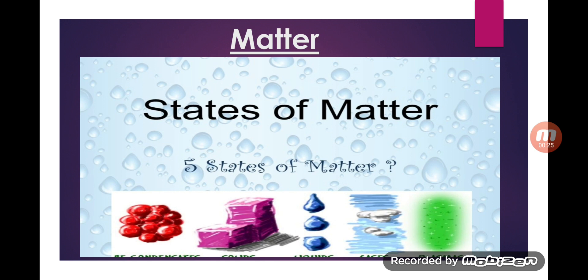Actually, there are five states: solid, liquid, gas, plasma, and Bose-Einstein condensate. But in your class, we will discuss only three states — solid, liquid, and gas. We have already discussed what is solid, what is gas, and what is liquid, and also the arrangement of molecules and atoms in the case of solid, liquid, and gases.